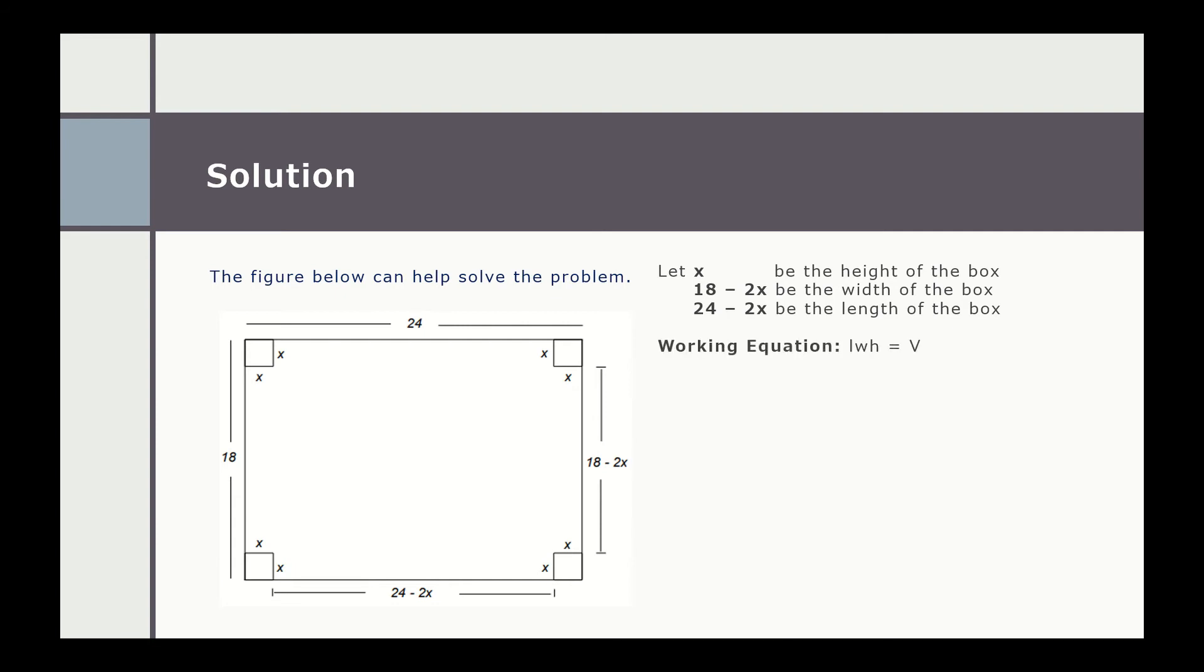Since we are talking about the volume of a rectangular box, our working equation is length times width times height. The volume of the box is 560, so 24 minus 2x multiplied by 18 minus 2x multiplied by x equals 560. Expanding this gives us 4x³ minus 84x² plus 432x equals 560.